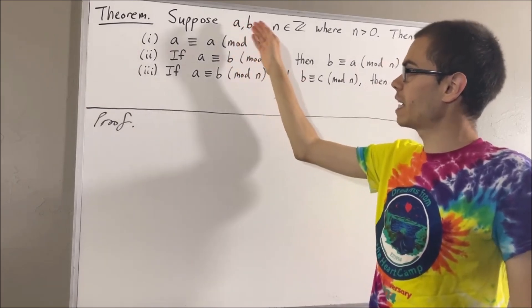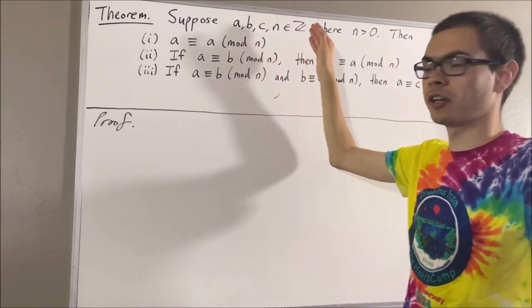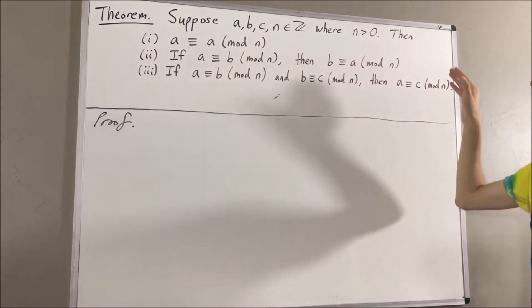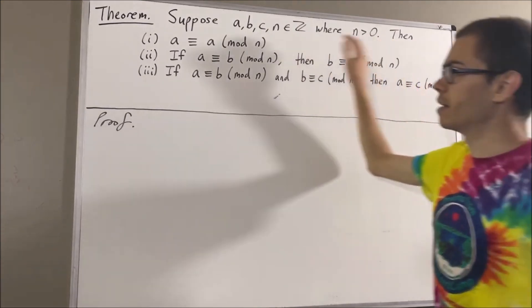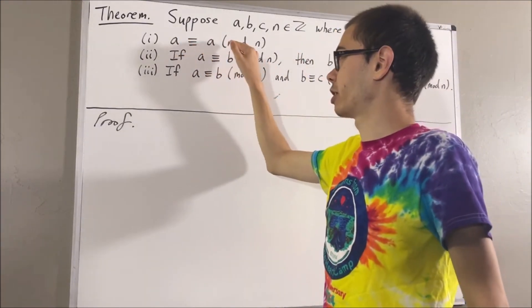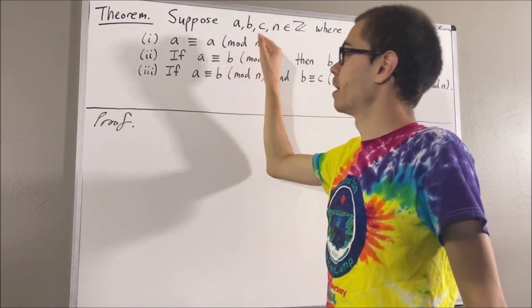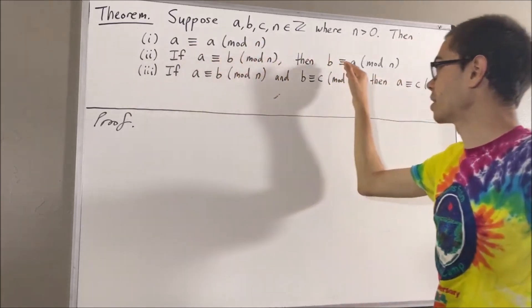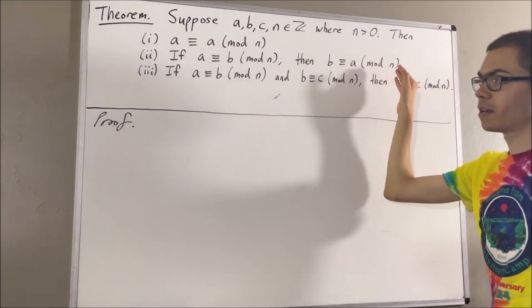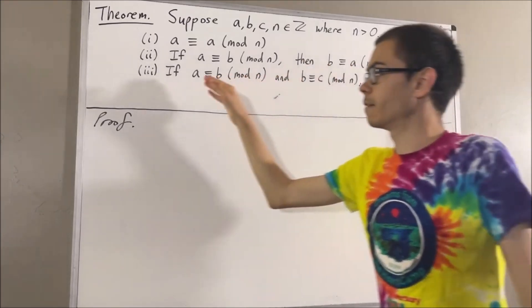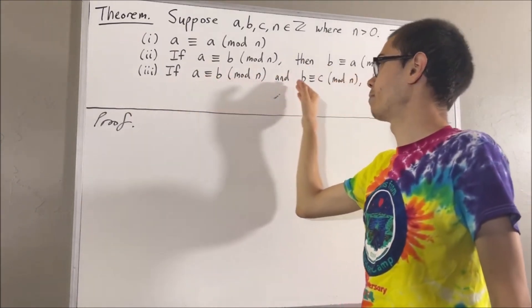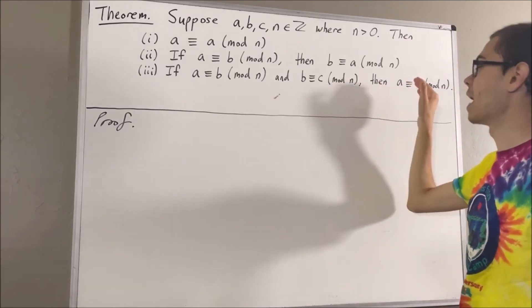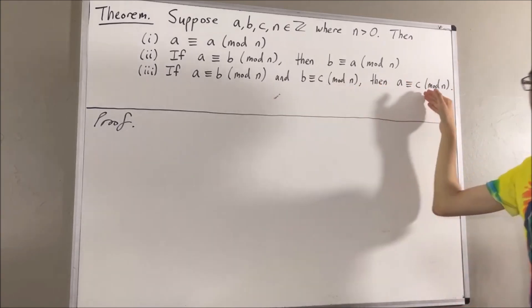Suppose a, b, c, and n are integers, where n is greater than 0. Then, a is congruent to a modulo n. If a is congruent to b modulo n, then b is congruent to a modulo n. And if a is congruent to b modulo n and b is congruent to c modulo n, then a is congruent to c modulo n.